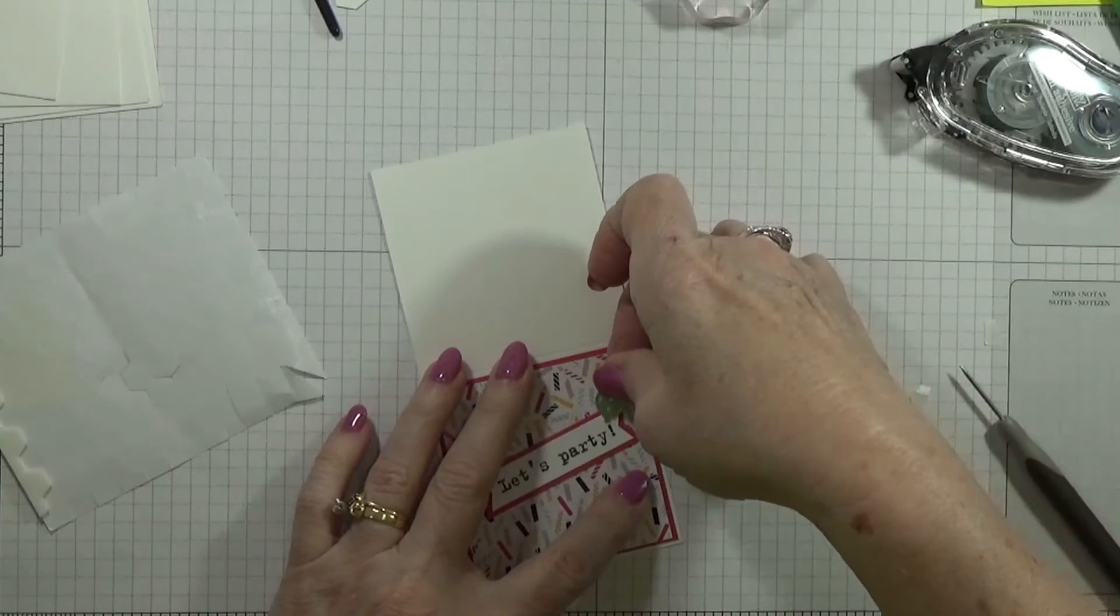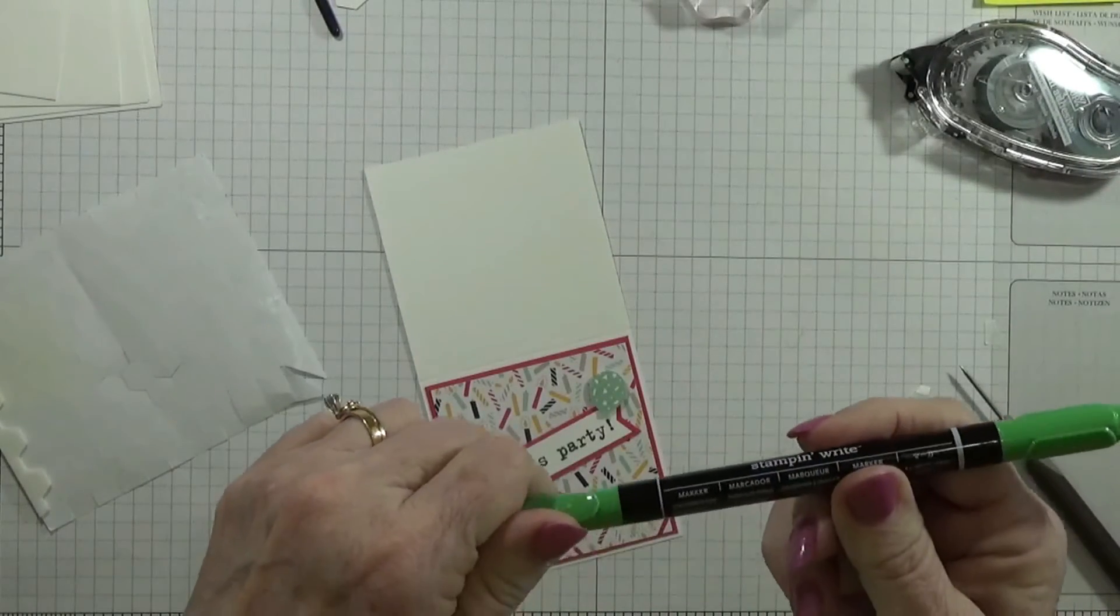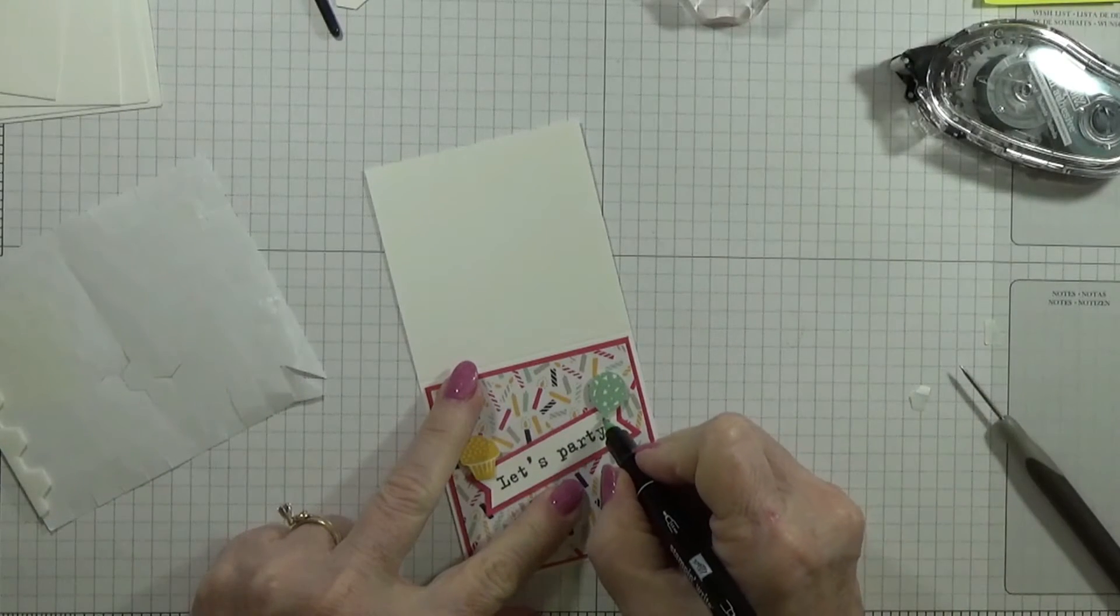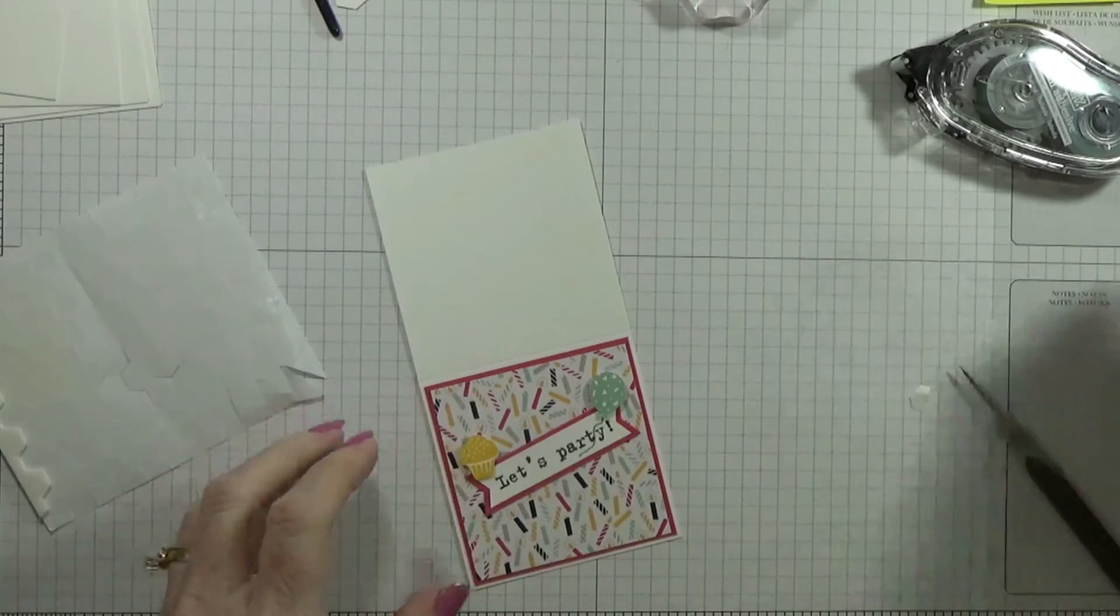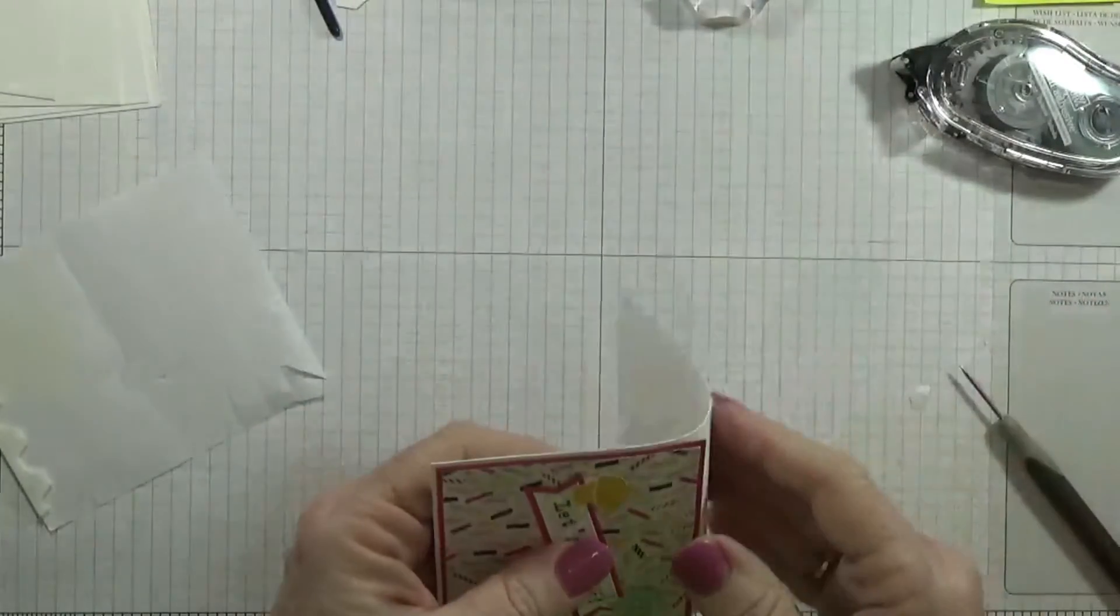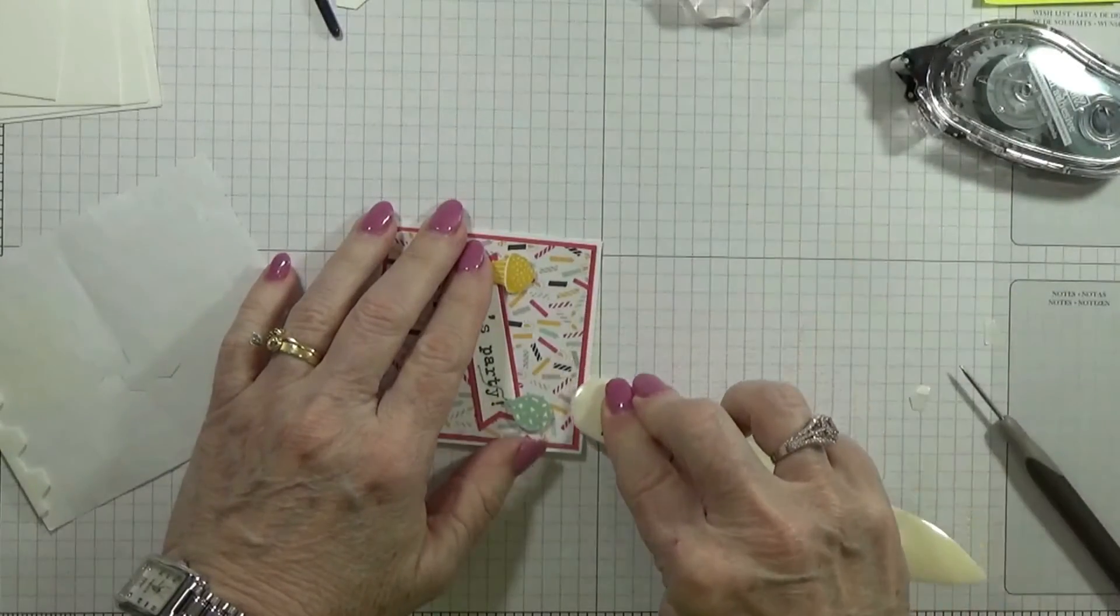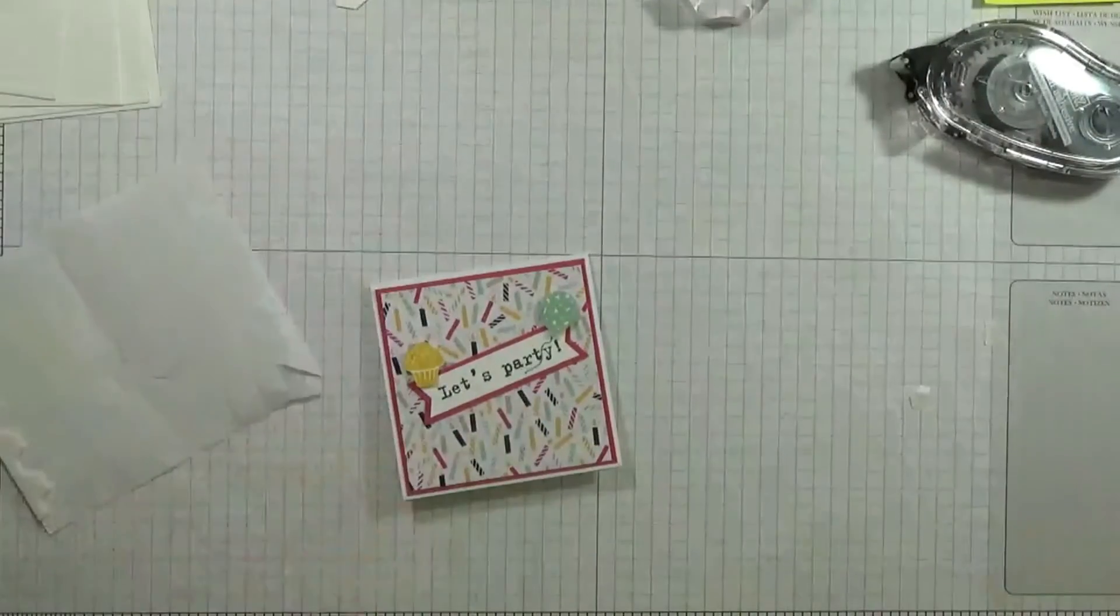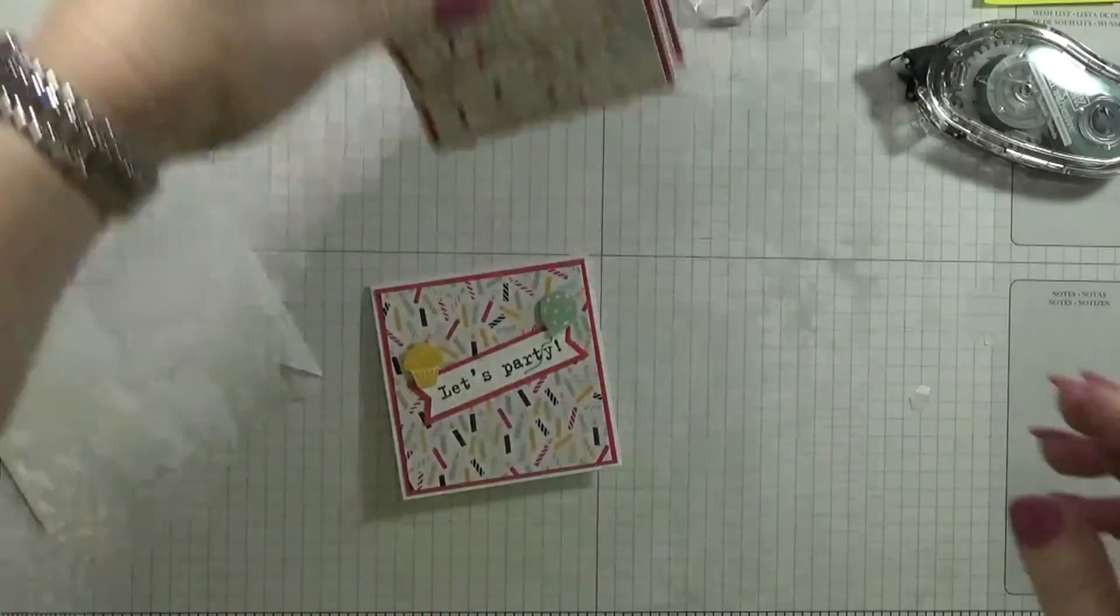And I'm going to stick this at a little bit of an angle. Then I'm going to take the Cucumber Crush marker and I'm just going to bring a little line down just like that for the tail. Then I'm going to fold that, use my bone folder just like that, and there's your little card. Like I said, these make really cute little invitation cards.